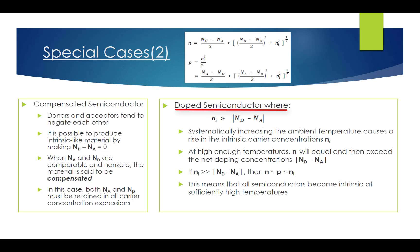The fourth special case is when intrinsic carrier concentration ni is far greater than the net doping, the absolute value of Nd minus Na. As we know, systematically increasing the ambient temperature causes a monotonic rise in the intrinsic carrier concentration ni. At sufficiently high temperatures, ni will eventually equal and then exceed the net doping concentration. If ni is far greater than the absolute value of Nd minus Na, the square roots in the general case reduce to ni, and both n and p approximately equals ni. This means that all semiconductors become intrinsic at sufficiently high temperatures.